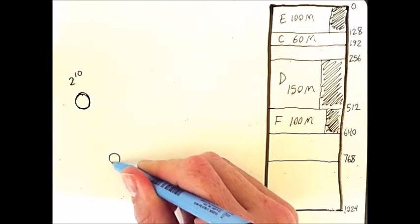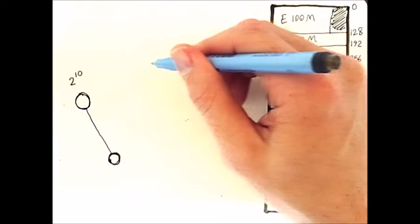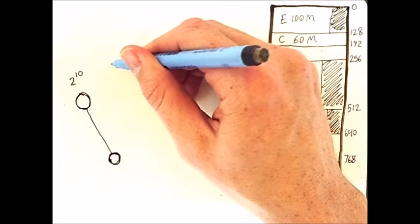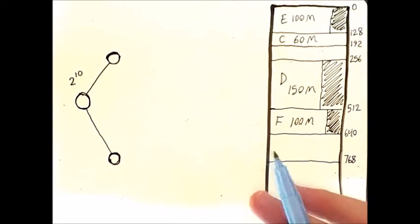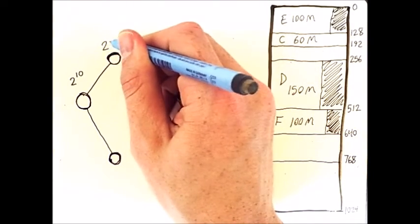So I'll draw a child node here, and the halfway point in the upper region is at 256. So I'll draw that child node right here. Each of these memory regions is 512 megabytes large, which is 2 to the 9.